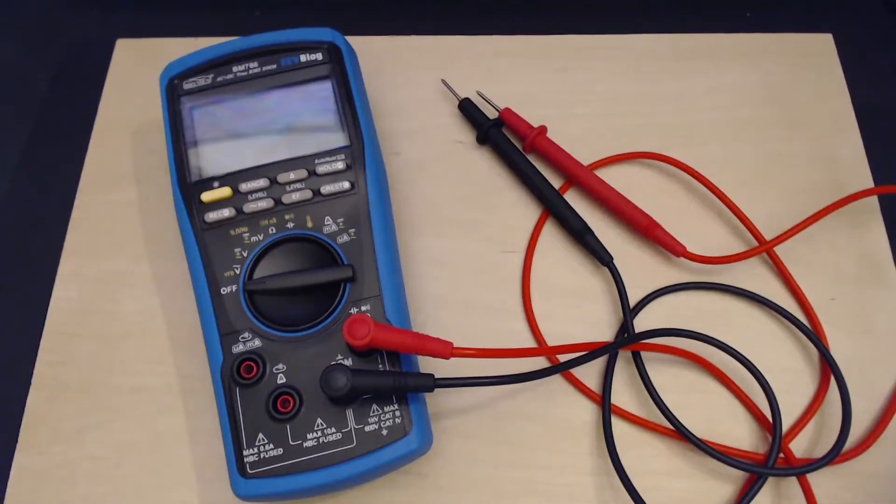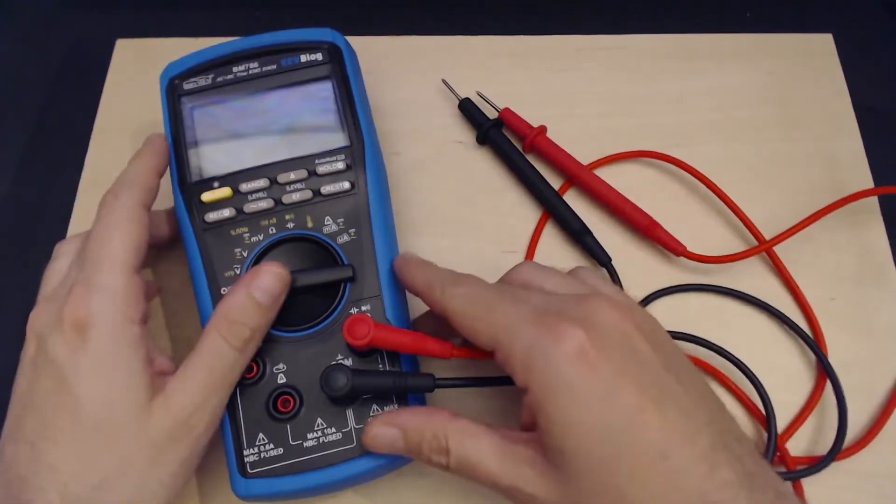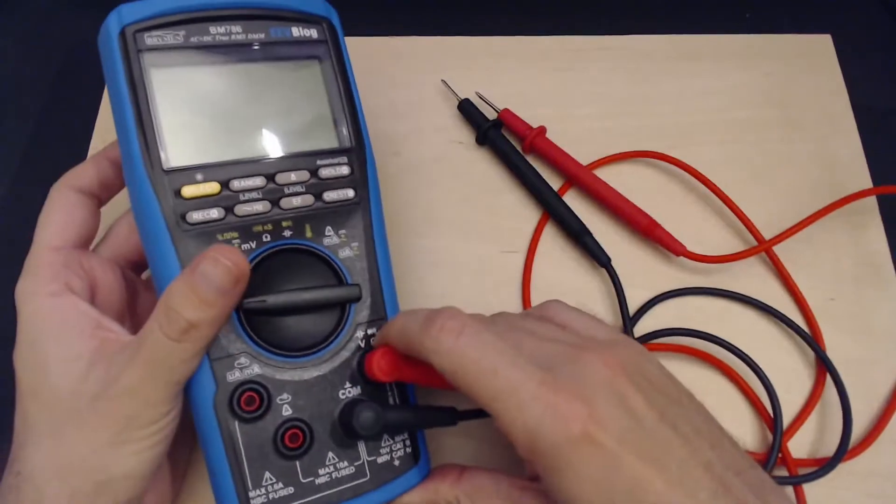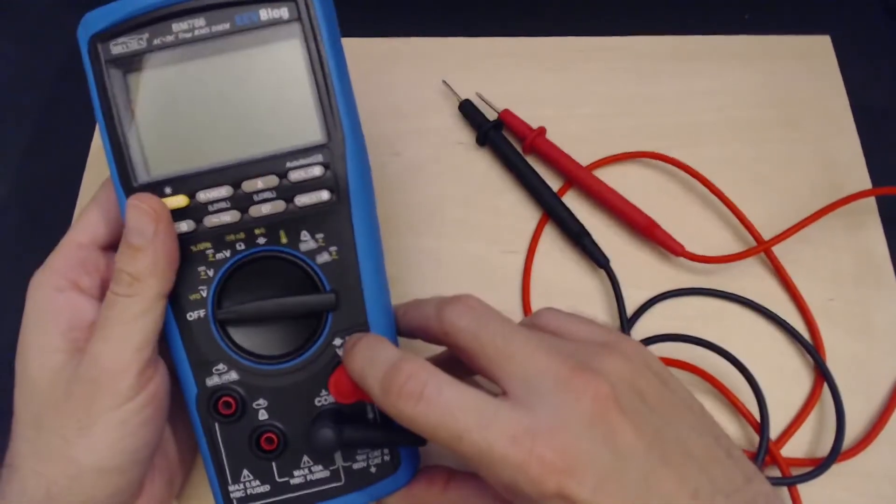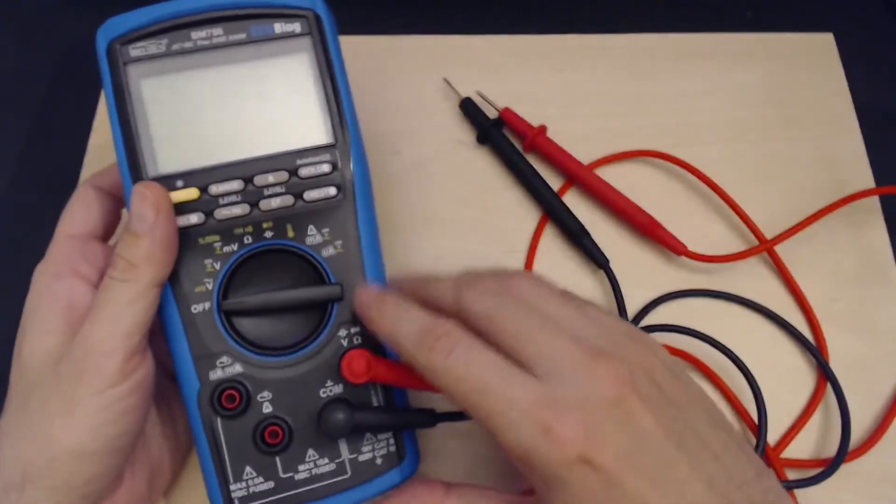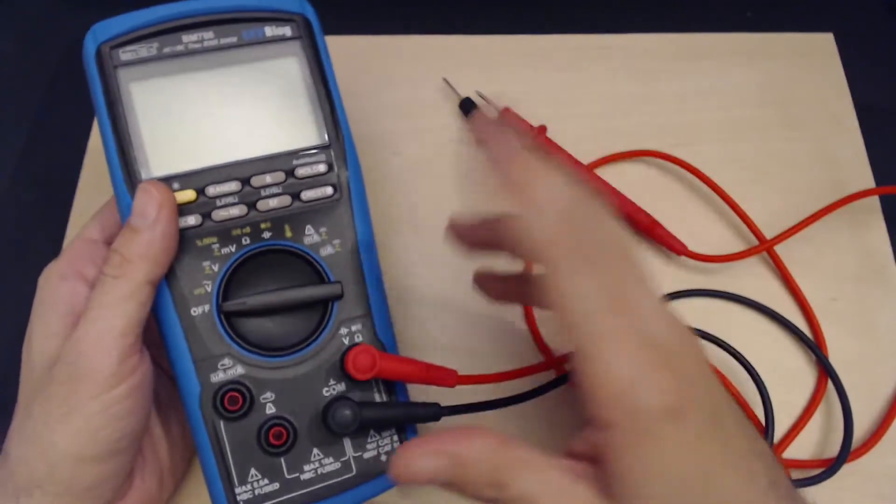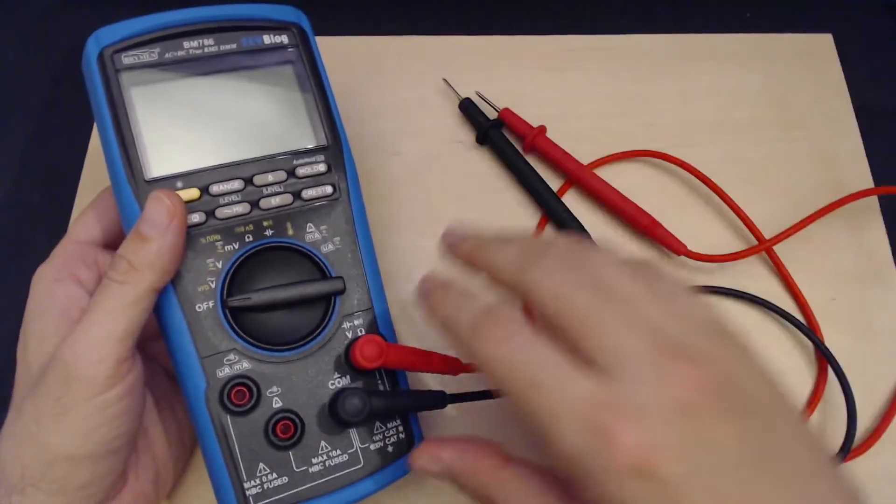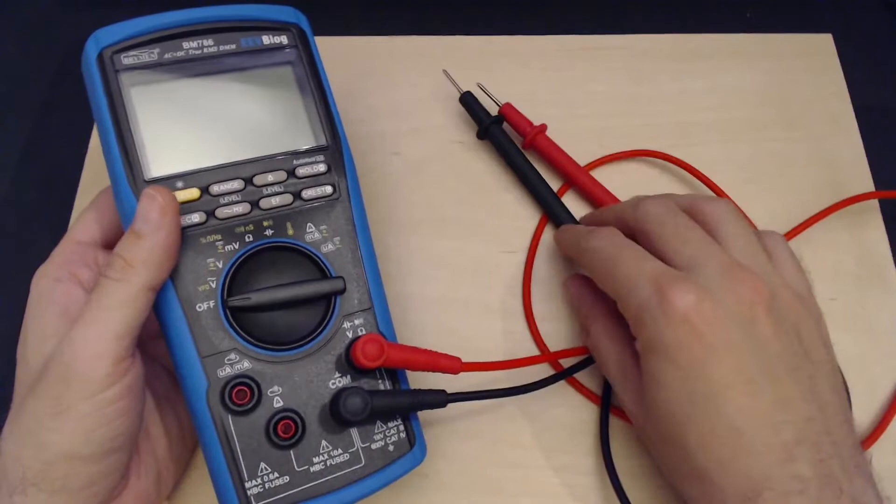Hi everyone, this video is an addendum to my previous review of the BM 786 true RMS digital multimeter. If you haven't seen that video, you should watch it first. I'll put the link on screen and in the description below.